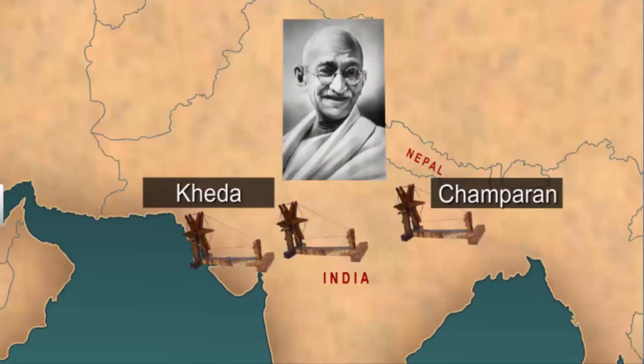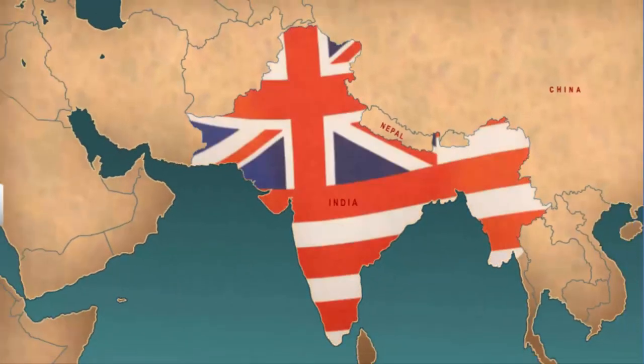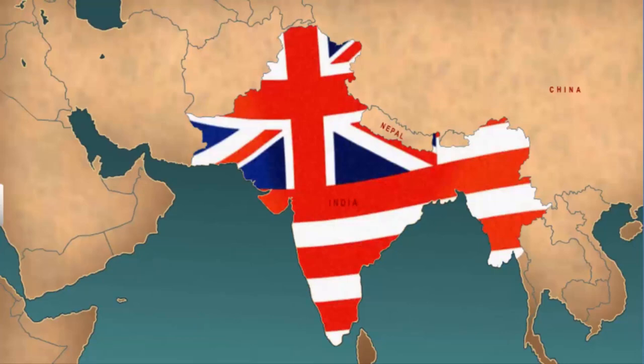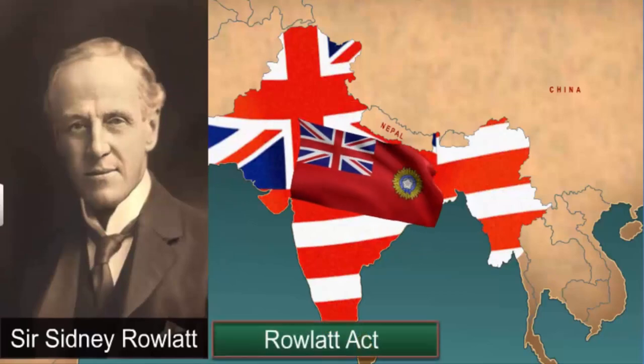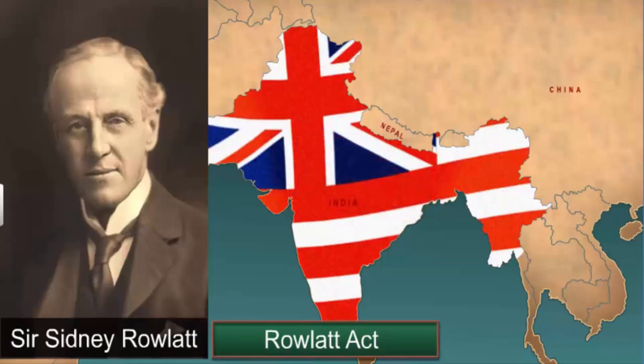Threatened by the growth of Satyagraha, the British decided to exert more control over public activities. As a result, they proposed the Rowlatt Act in 1919, named after its chairman Sir Sidney Rowlatt. The Rowlatt Act was aimed to curb political activities in the country, equipping the courts with the power to detain political prisoners without trial for two years. Mahatma Gandhi opposed the Rowlatt Act by starting a peaceful Satyagraha and suggested a civil disobedience beginning with a hartal on 6th April 1919. It was followed by rallies, strikes by railway workers, and closing down of shops, bringing day-to-day work across the country to a grinding halt.